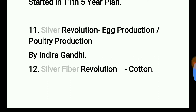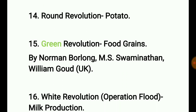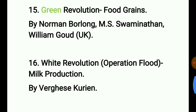The Silver Revolution is for egg and poultry production, coined by Indira Gandhi. Silver Fiber Revolution is for cotton — your task is to comment who coined this term. The thirteenth is the Red Revolution, for meat and tomato production, coined by Vishal Tiwari. The Round Revolution is for potato — easy to remember because of its round shape.